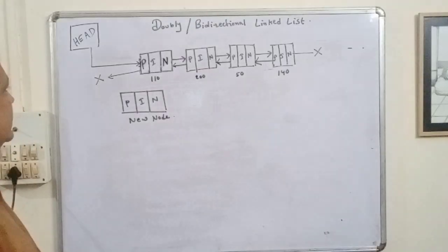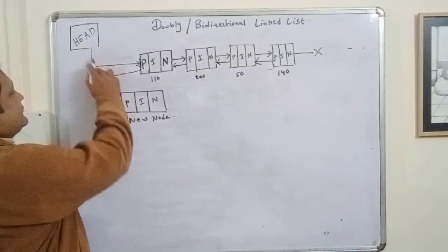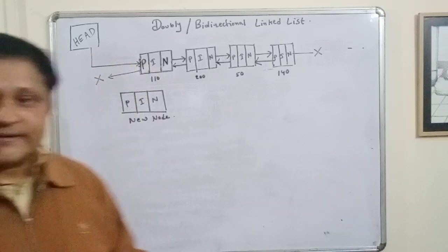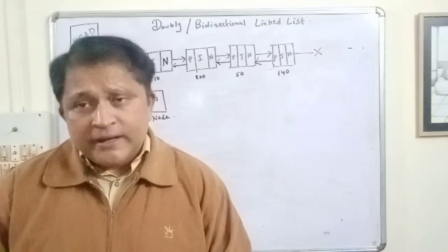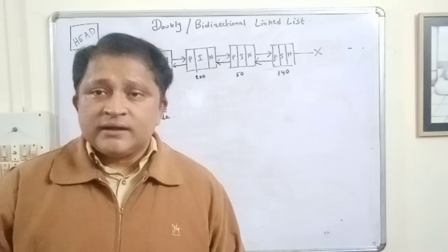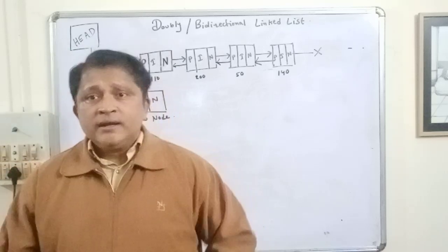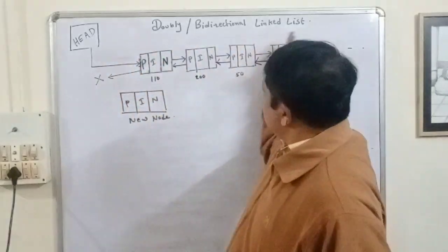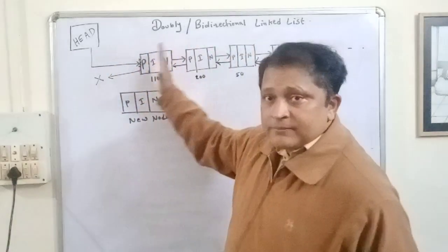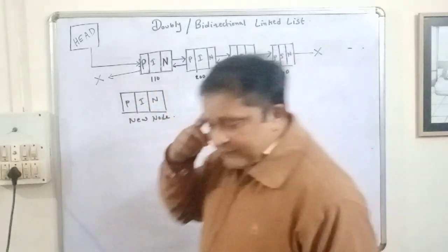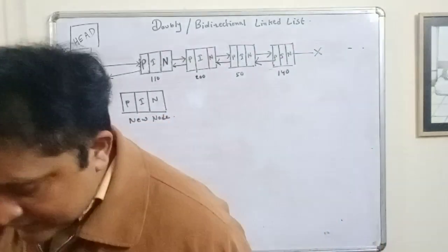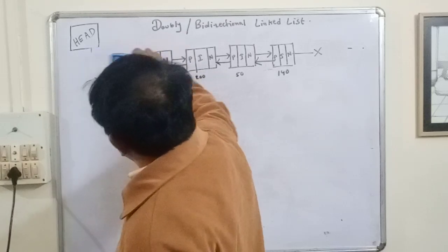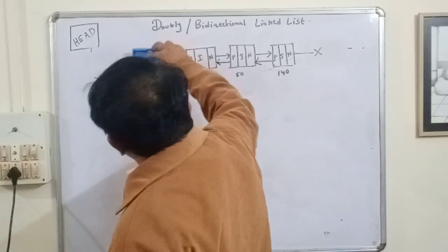There are two cases for inserting a new node at the beginning. First, the linked list can be empty. Another case — the linked list is not empty. If the linked list is empty, there is nothing in the list, and the head is not connected to any node.